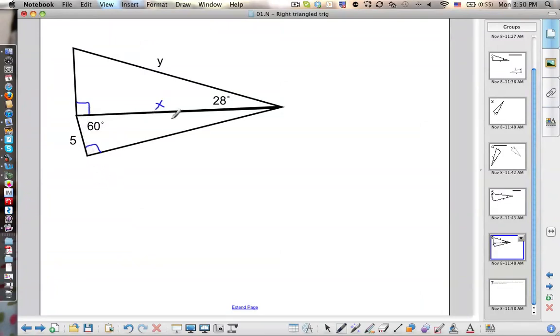So adjacent and hypotenuse, that's cosine. So cosine of 60 equals 5 over x.